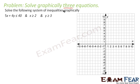Here are three equations: equation 1, equation 2, and equation 3. First we'll draw the line for 5x plus 4y is less than 40, so we create the line 5x plus 4y is equal to 40.